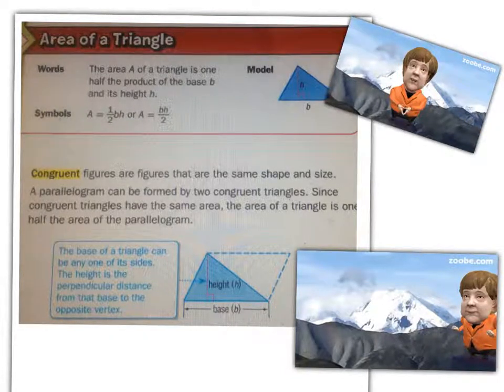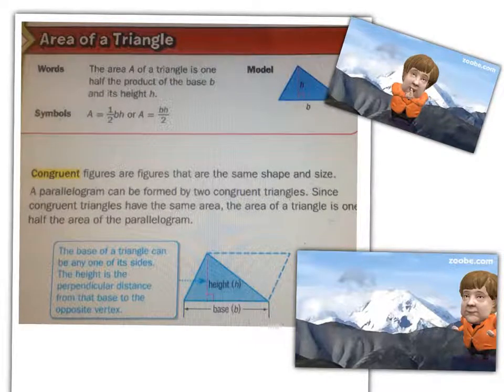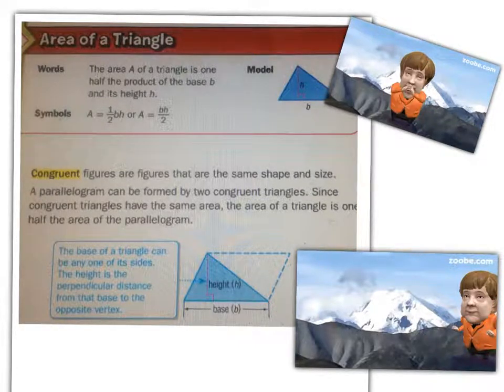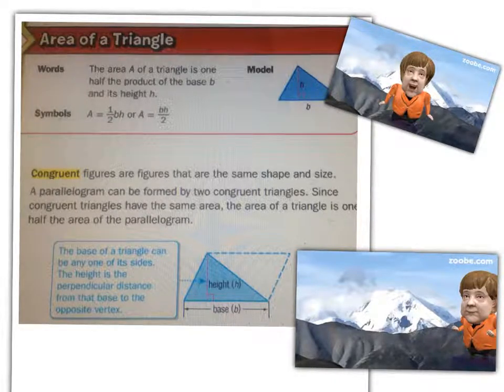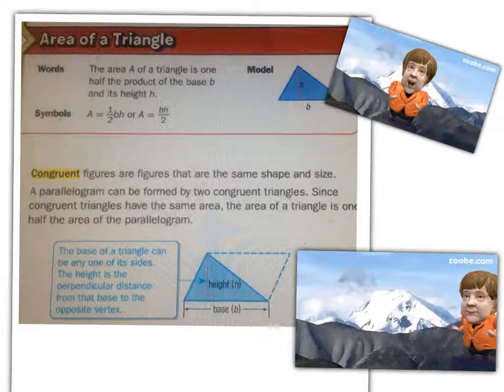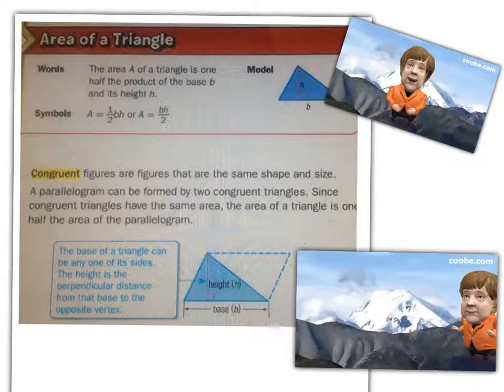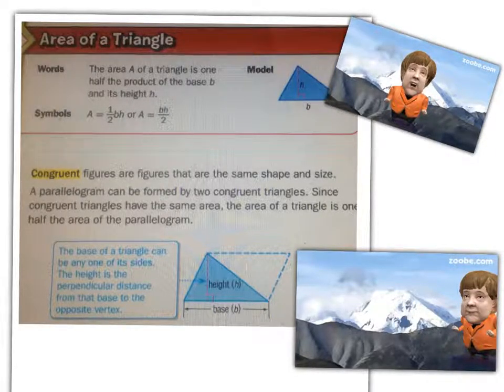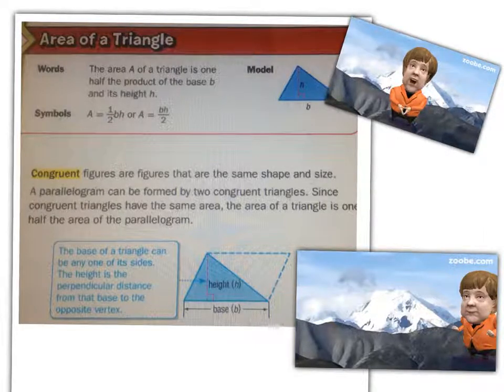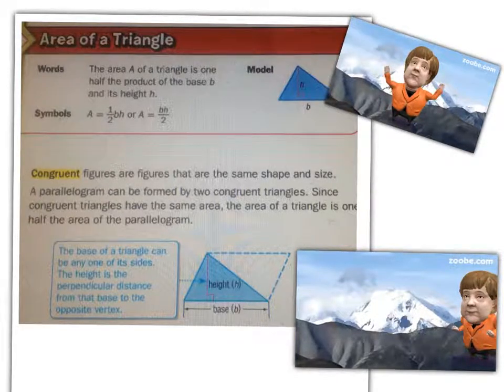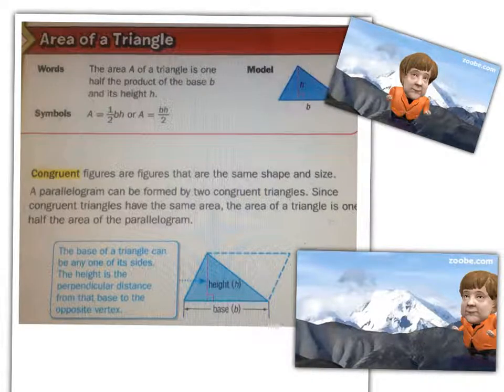The area A of a triangle is one half the product of the base and its height. Another way to say that is area equals one half times base times height. Or you could even say area equals base times height divided by two. Please look at the different ways that this formula can be written.